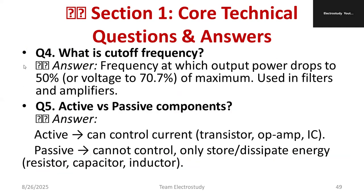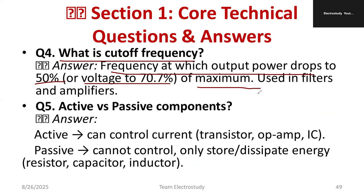What is cutoff frequency? It is the frequency at which the output power drops to 50% or voltage drops to 70.7% — also expressed as minus 3 dB of the maximum value. It is used in the context of filters and amplifiers.